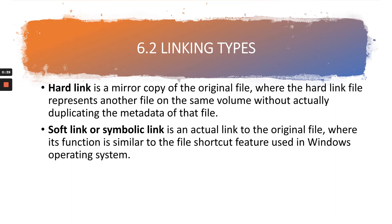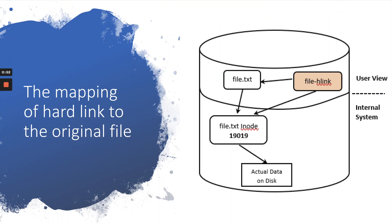On the other hand, a soft link or symbolic link is an actual link to the original file, where its function is similar to the file shortcut features that we usually use in Windows operating system. Let's look at this figure, which shows the mapping of hard link to the original file.